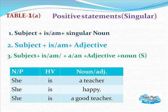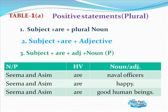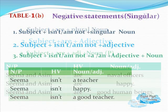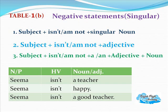Let's see more examples. She is a teacher. She is happy. She is a good teacher. For plural positive statements: Seema and Asima are naval officers. Seema and Asima are happy. Seema and Asima are good human beings. You can see the word order in tabular form on the screen.